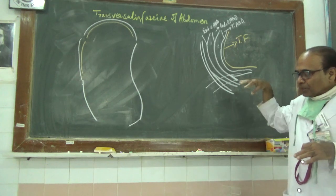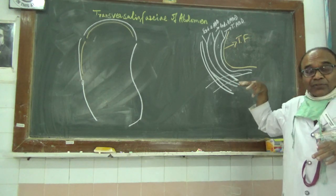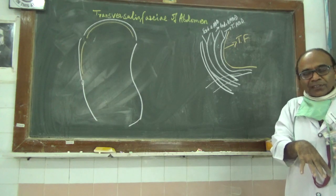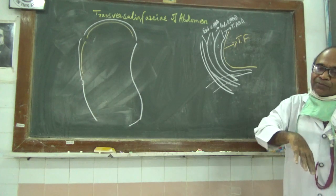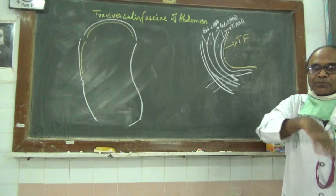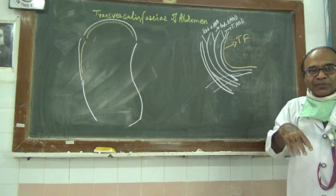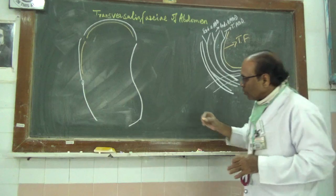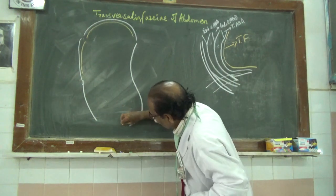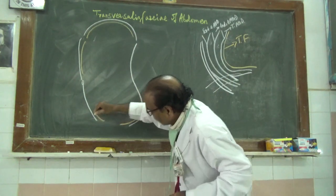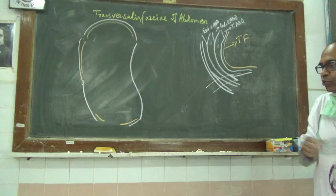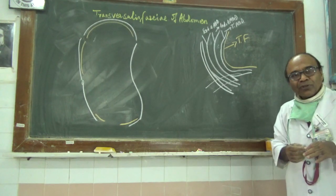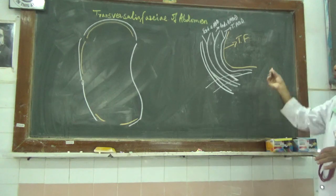The transversalis fascia dips into the pelvic cavity, and after covering the brim of the pelvis, it becomes the pelvic fascia, which covers the superior part of the pelvic diaphragm, known as the pelvic fascia or the superior layer of the pelvic diaphragm.